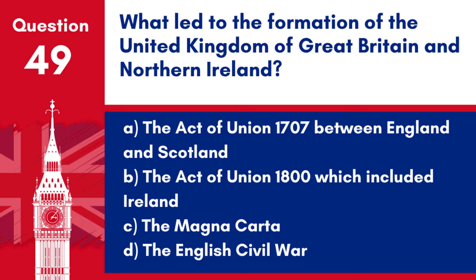Question 49. What led to the formation of the United Kingdom of Great Britain and Northern Ireland? a. The Act of Union 1707 between England and Scotland. b. The Act of Union 1800, which included Ireland. c. The Magna Carta. d. The English Civil War.